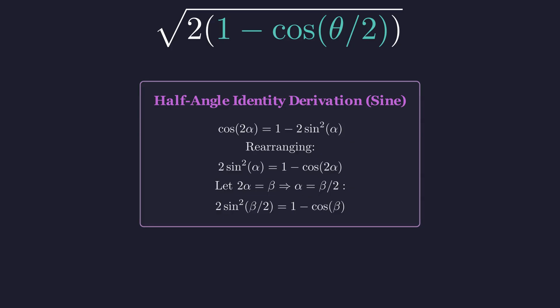For 1 minus cosine, we use the alternate form of the double angle formula: cosine of 2α equals 1 minus 2 sine squared α. Rearranging, we get 2 sine squared α equals 1 minus cosine of 2α. If we let 2α equal β, then α equals β over 2.